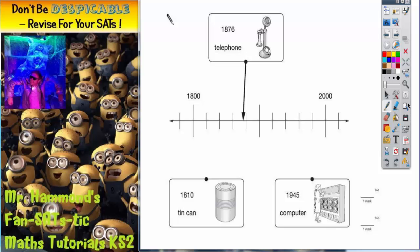So if we scroll down we can see that the telephone was invented in 1876, which we are told is at this point on the timeline. Now a timeline is just like a number scale, a number line.